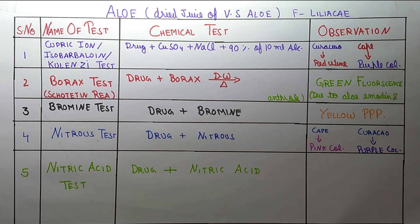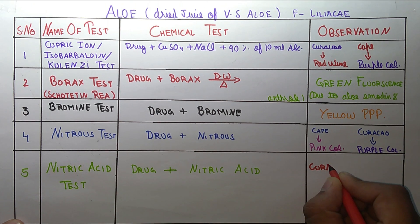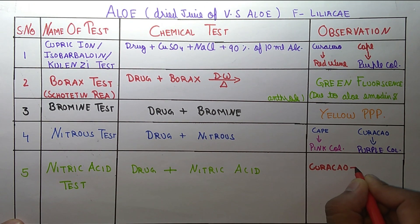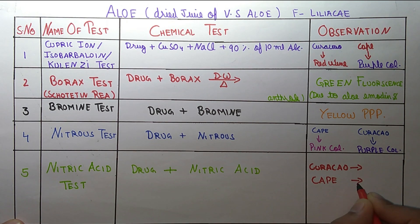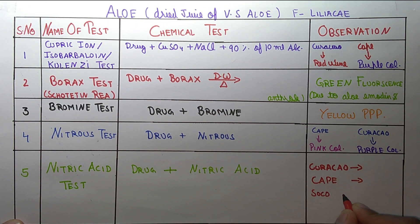Which are the four varieties? First one is Curacao, second one is Cape, third one is Scotatin, fourth one is Gingyber.